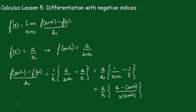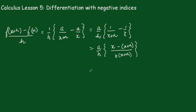Continuing on, that equals (a/h) times (-h)/[x(x+h)]. Now these h's cancel.